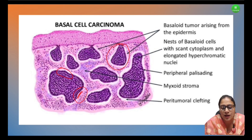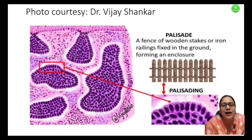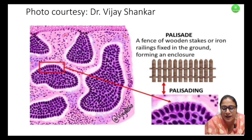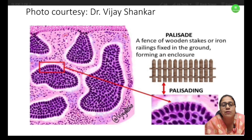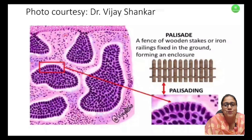This is characteristic nuclear palisading. Palisades means like the parallely arranged wooden planks in a fence. Thank you.